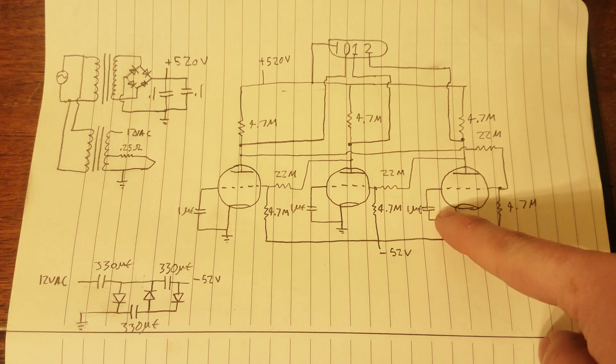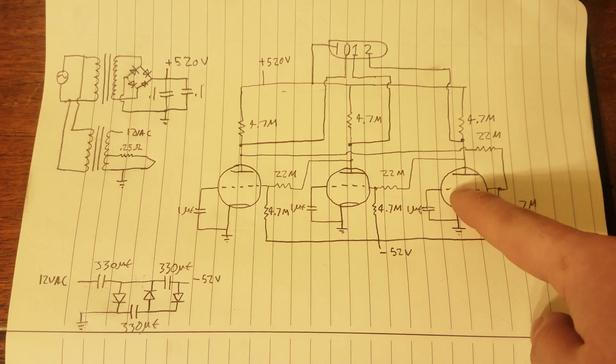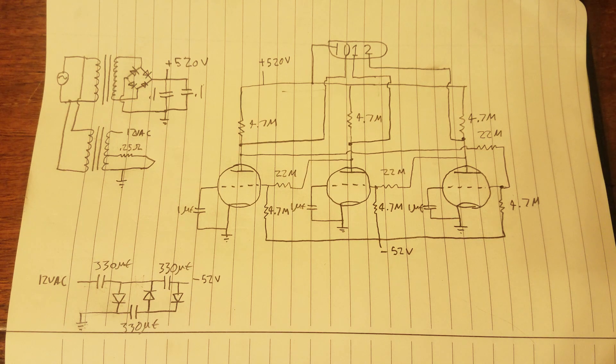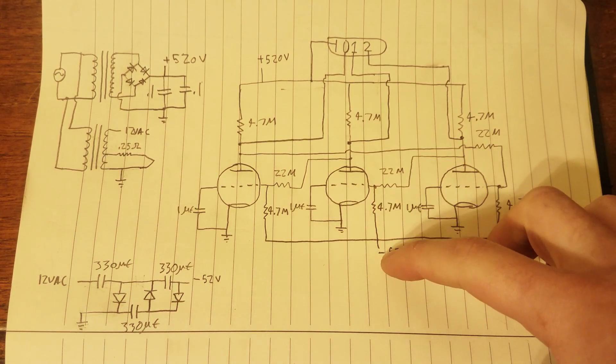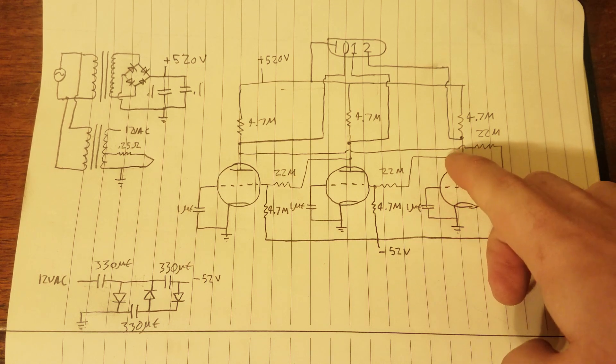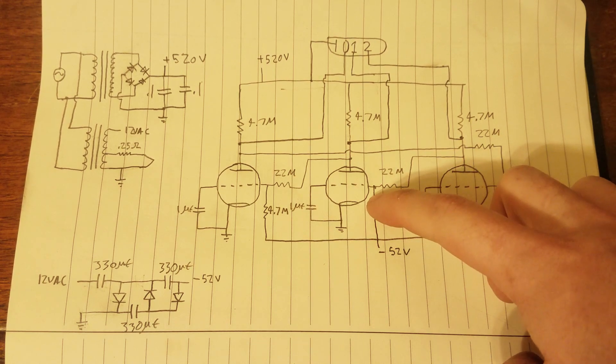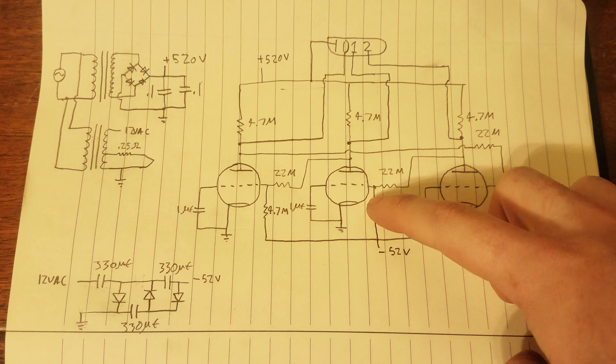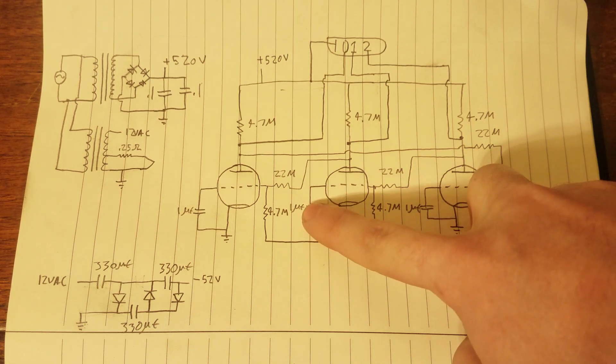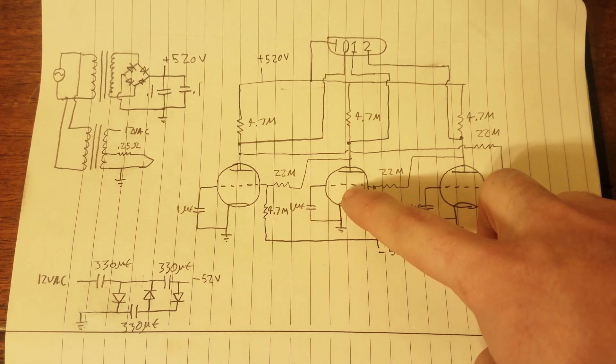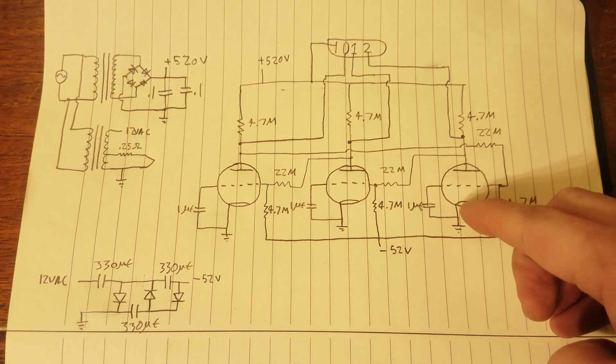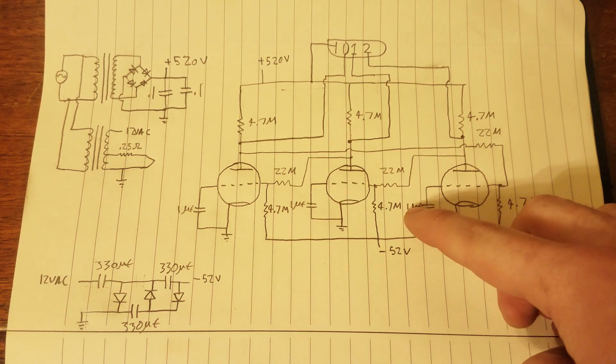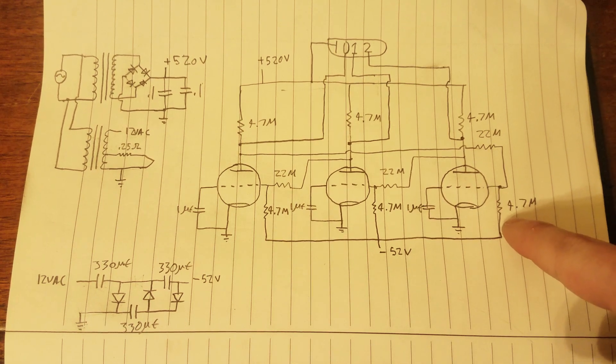So what that will do is cause this plate to pull low, which will increase the voltage right here because it's negative 52 volts here now. Causing this point to pull low will make this point more positive, which will start to charge this capacitor and start to turn this tube on. And that is happening as this tube is starting to turn off because this capacitor right here is being discharged by this resistor.